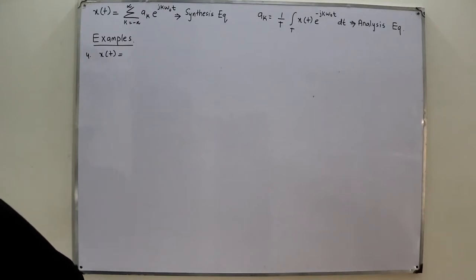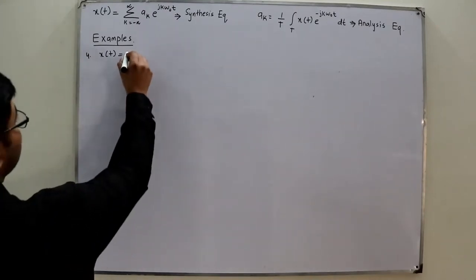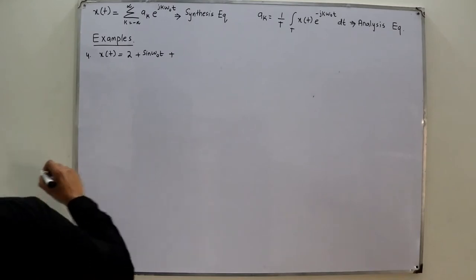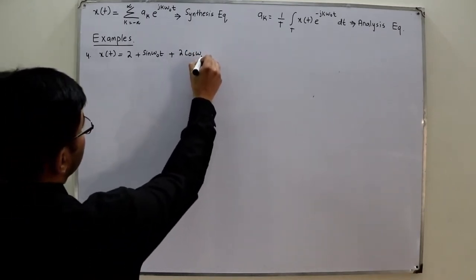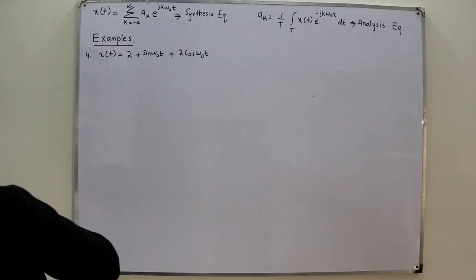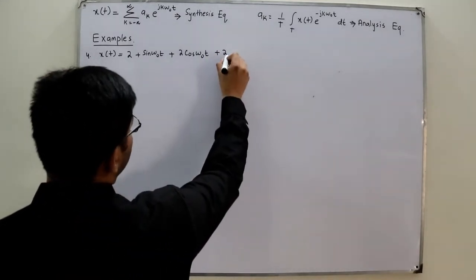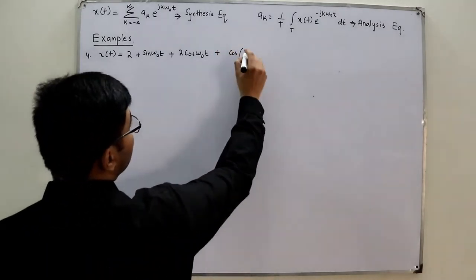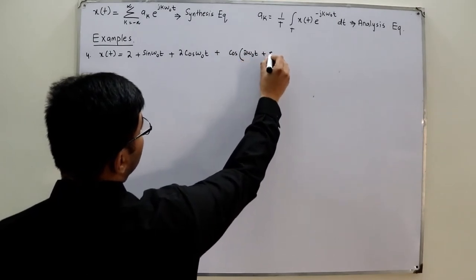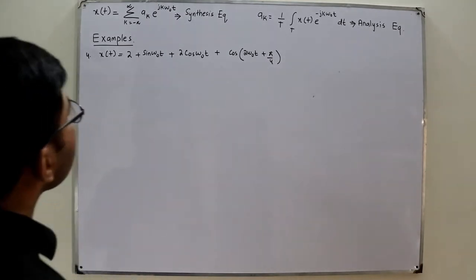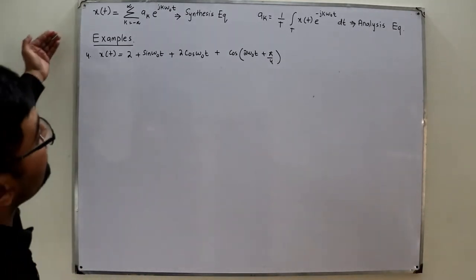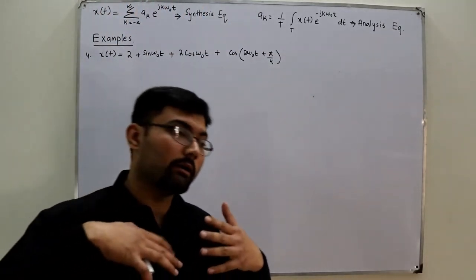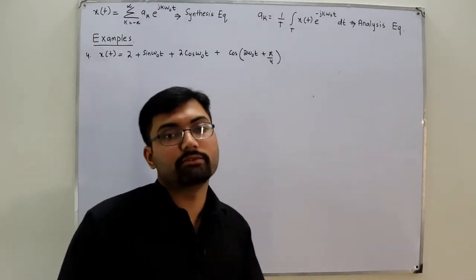The signal is x(t) = 2 + sin(ω₀t) + 2cos(ω₀t) + cos(2ω₀t) + cos(2ω₀t + π/4). So this last term has a phase shift. We are asked to find the Fourier series representation, the Fourier coefficients, and also the magnitude and phase spectrum.